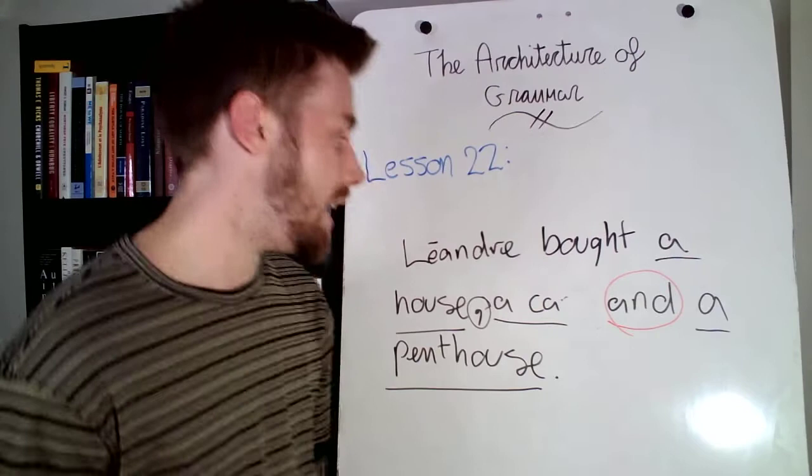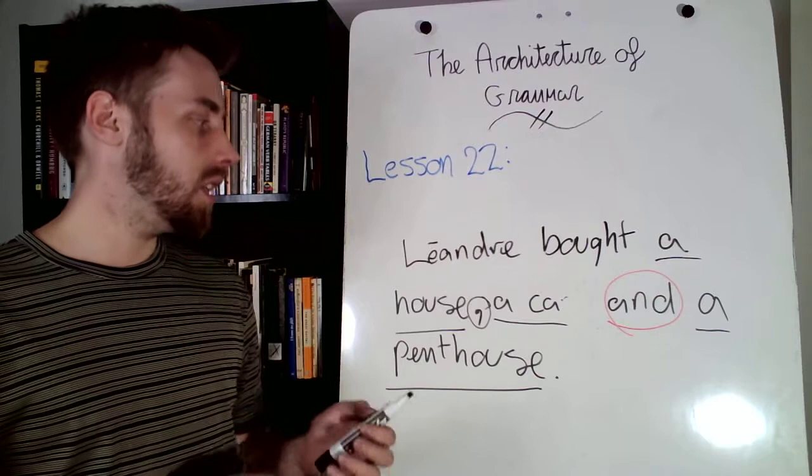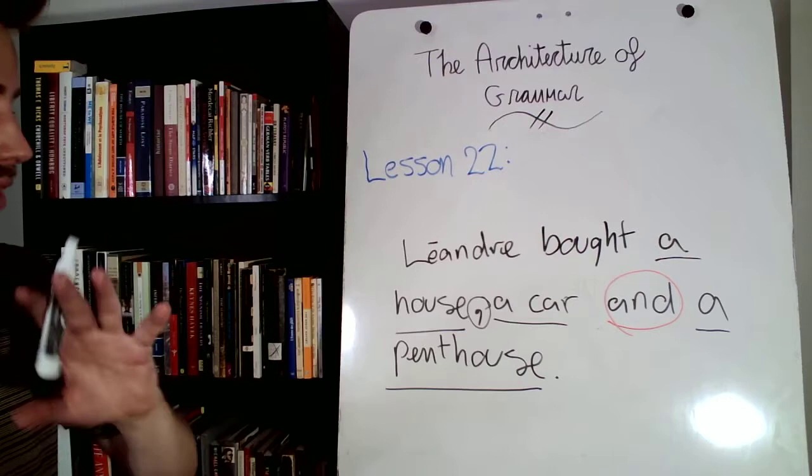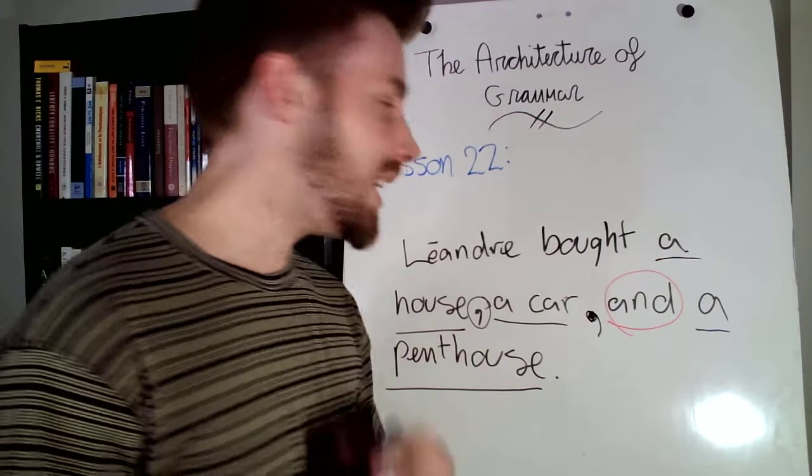And, so, you can see, for example, online, if you look for some Oxford comma mistakes. Or, what happens if you don't use Oxford commas. There's some really funny examples. Especially with Bill Clinton and Lady Gaga. Though, I forget exactly what it was. But, León bought a house, a car, and a penthouse. So, this is without the serial comma. And, this is with the serial comma.